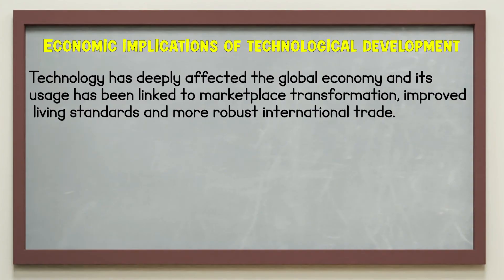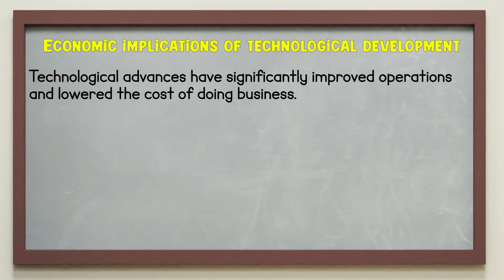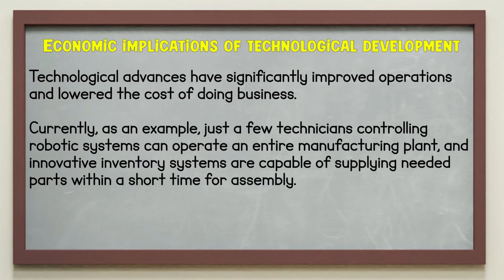Now let us turn our attention to the economic implications of technological development. Technology has deeply affected the global economy, and its usage has been linked to marketplace transformation, improved living standards, and more robust international trade. If technology has virtually revolutionized every industry in the current global economy, why do economists still question whether technology is visible in traditional economic metrics such as GDP, productivity, and corporate profits? Technological advances have significantly improved operations and lowered the cost of doing business. Just a few technicians controlling robotic systems can operate an entire manufacturing plant, and innovative inventory systems are capable of supplying needed parts within a short time for assembly.